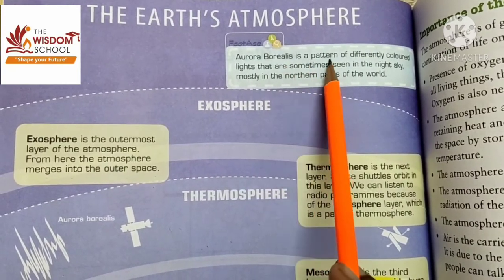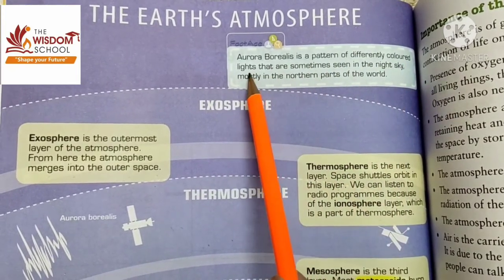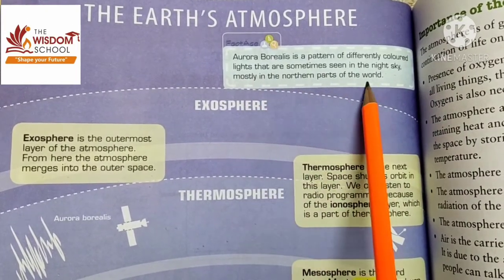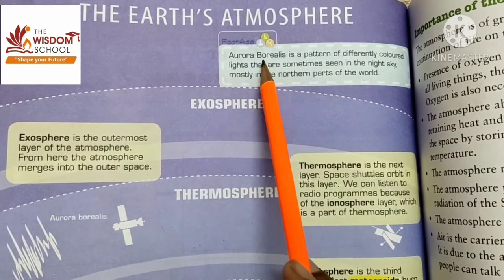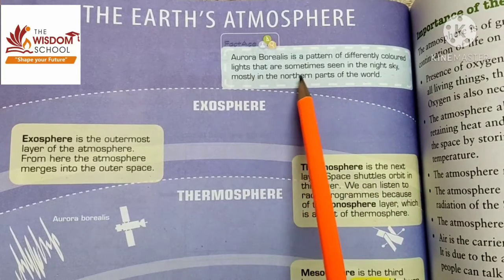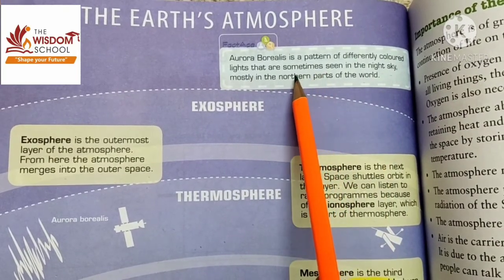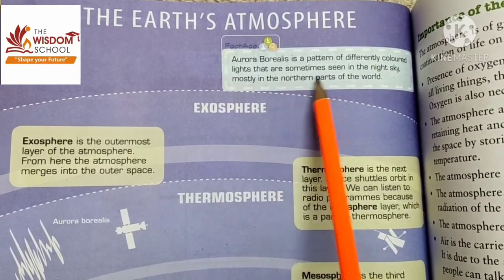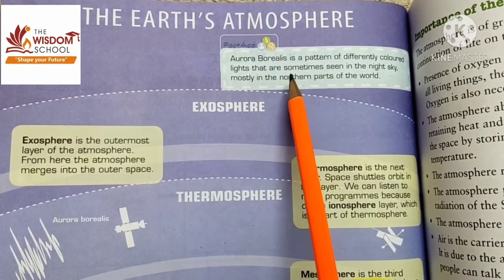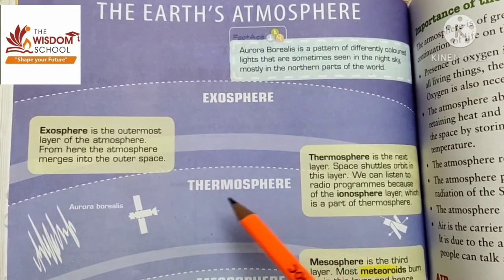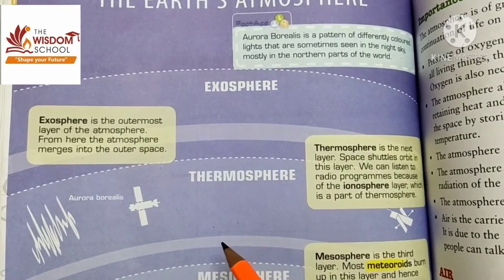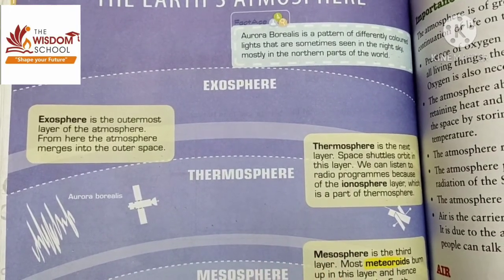Aurora borealis is a pattern of differently colored lights that are sometimes seen in the night sky, mostly in the northern parts of the world. This was all about earth's atmosphere and its different layers.